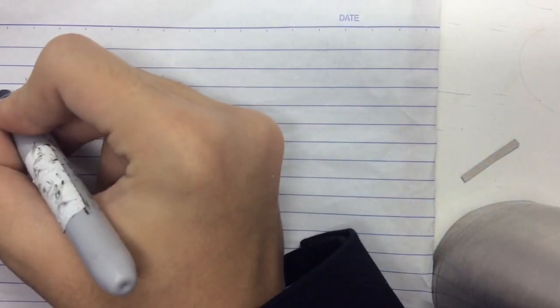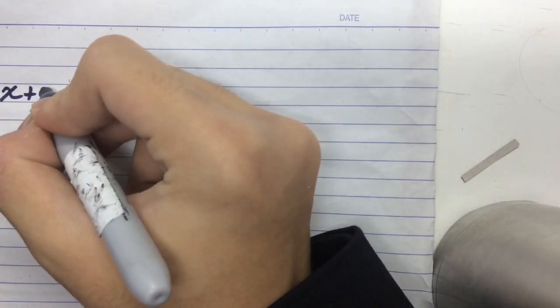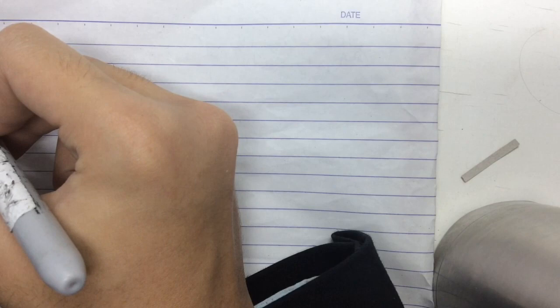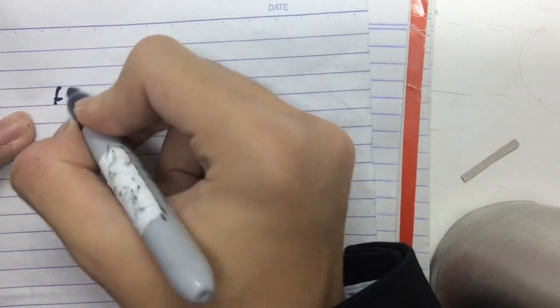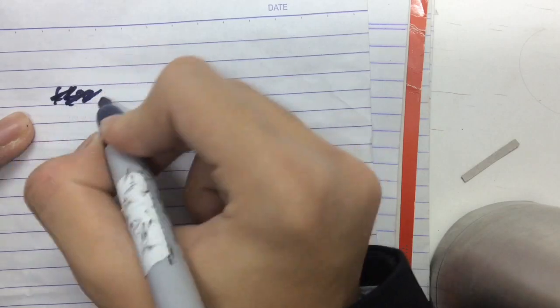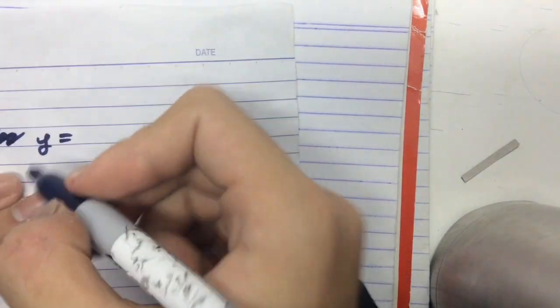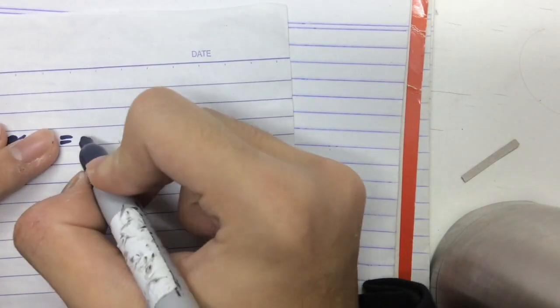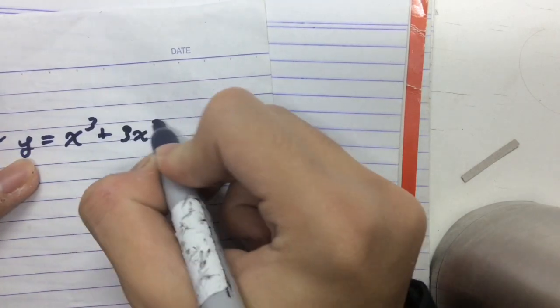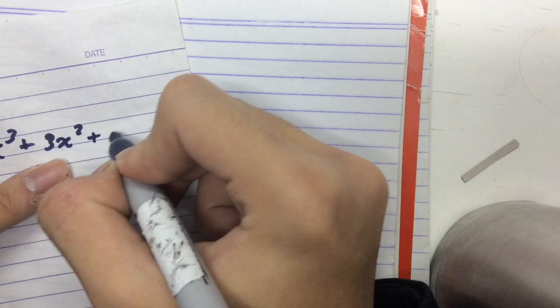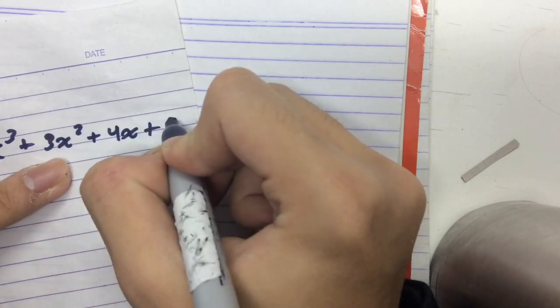So what if we're given something like, let's say, p(x) equals x plus 2. And f(x), actually let's use a different term, y is equal to x cubed plus 3x squared plus 4x plus 5.